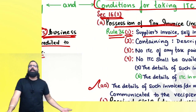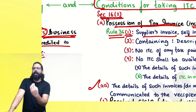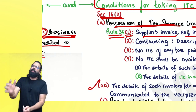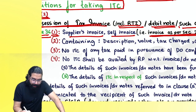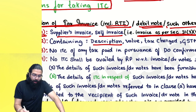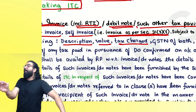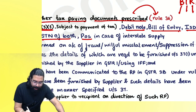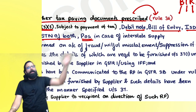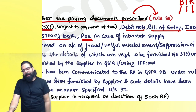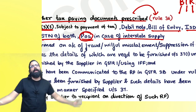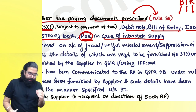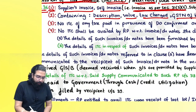Even if the document does not have all particulars, if it contains description of goods, value, tax charged, GSTIN of supplier and recipient, and place of supply — for example, if supply is in Kerala, place of supply is Kerala — then credit can be taken by the recipient. If the place of supply is there in interstate supply, credit can be taken.